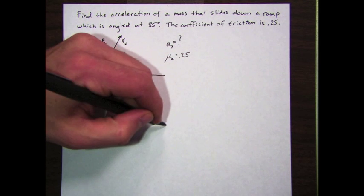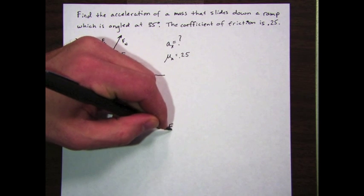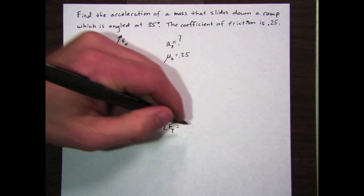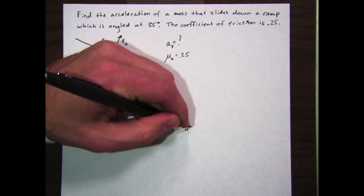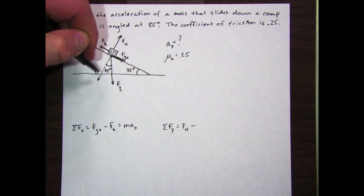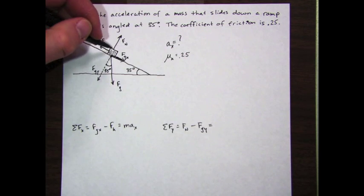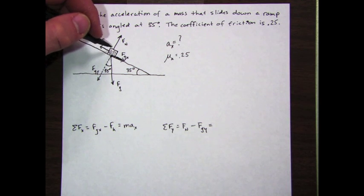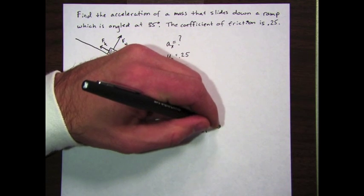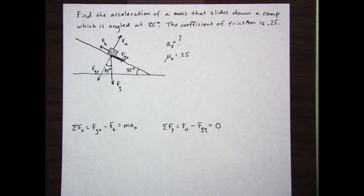In the y direction, I've got the normal force going up and I've got f g y going down. Like I said before, there is no acceleration in that direction, so they will equal zero when you put them together.